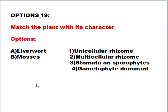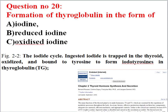The next question: match the plant with the character. Liverworts have a single-cell rhizoid whereas mosses have a multicellular rhizoid. Stomata are not present in liverworts, but in mosses stomata are present on the sporophyte. In liverworts, the gametophyte stage is the dominant phase. Both liverworts and hornworts follow a haplodiplontic cycle — alternating sporophyte and gametophyte generations. The sporophyte gives rise to spores by meiosis, and the gametophyte gives rise to gametes by mitosis.